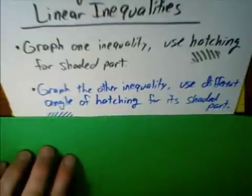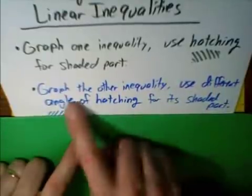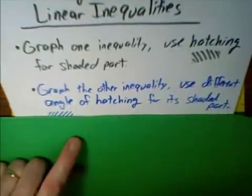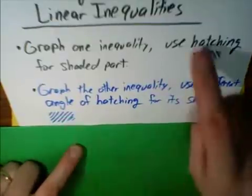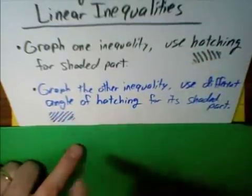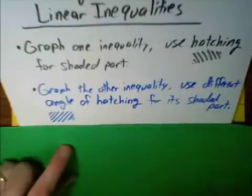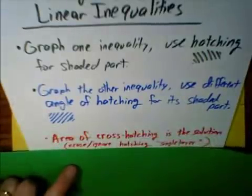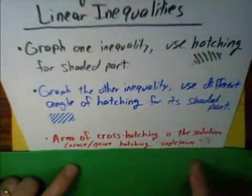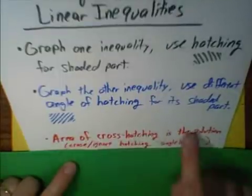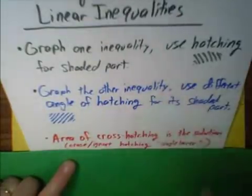Then, we're going to graph the other inequality. But we're going to use a different angle of hatching for its shaded part. So if we hatch to the left, we're going to hatch to the right. So we're going to end up with an area of cross-hatching. And the area of cross-hatching will be the solution of the system.